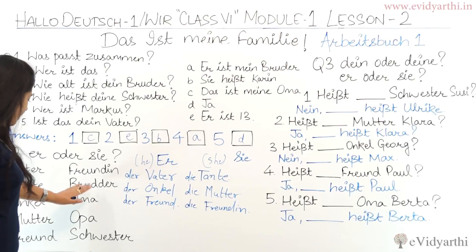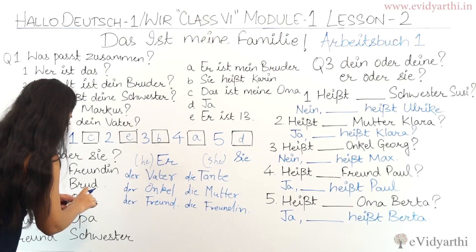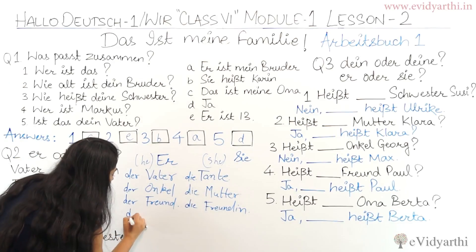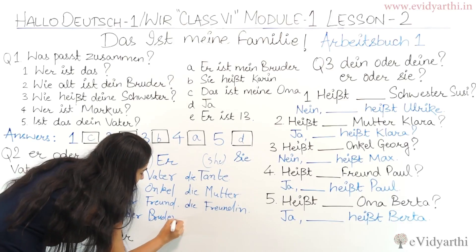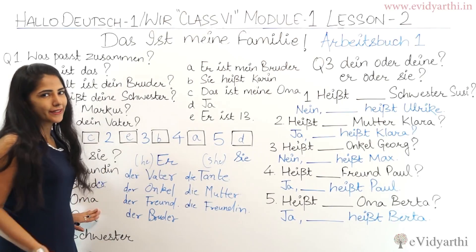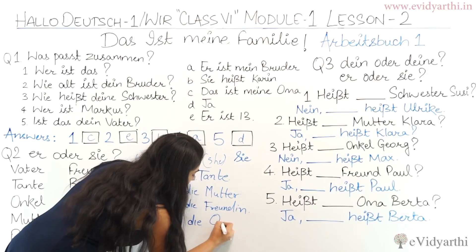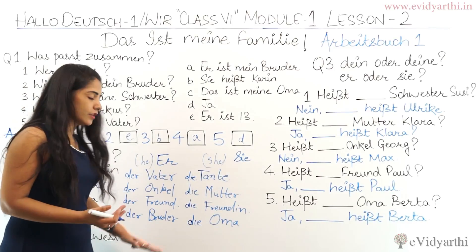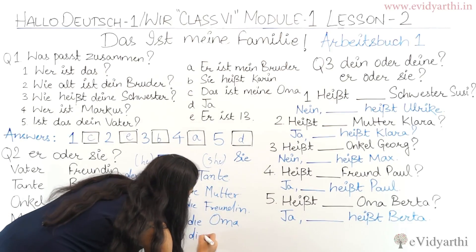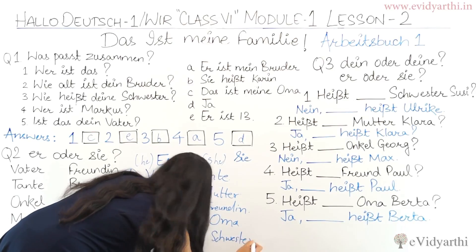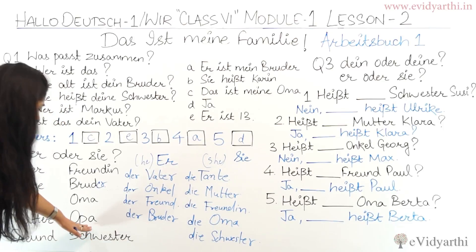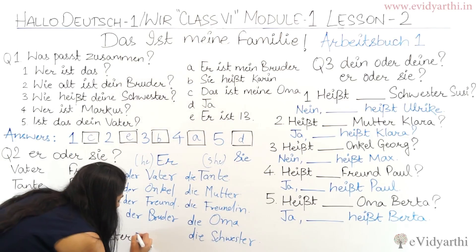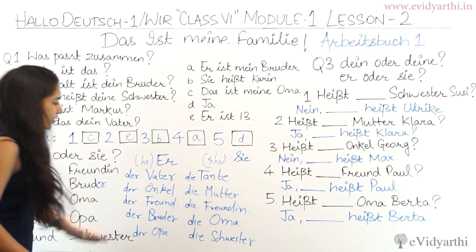Next is brother — he, so 'er.' Then 'Oma' — obviously she, feminine, 'die Oma,' and you would use 'sie' for her. Then 'Schwester,' Schwester is feminine — obviously she, 'die Schwester.' And 'Opa' is grandfather — he, 'er,' so 'der Opa.' These are the answers.